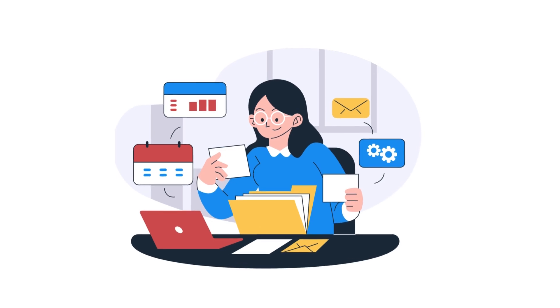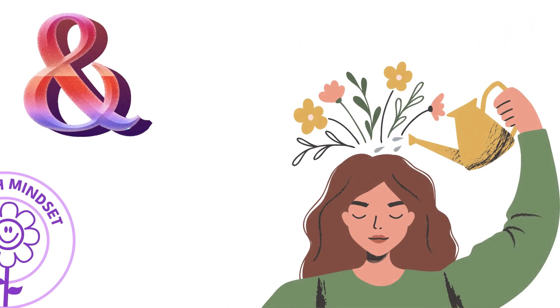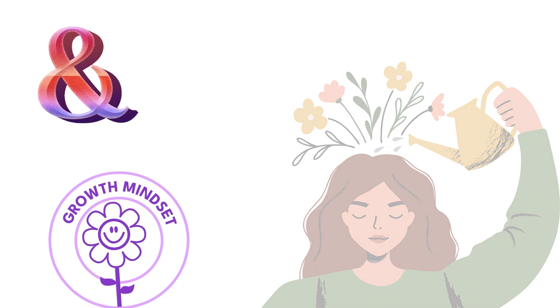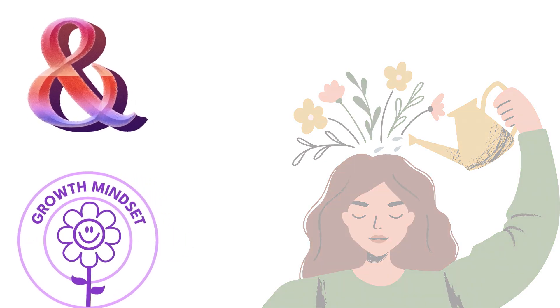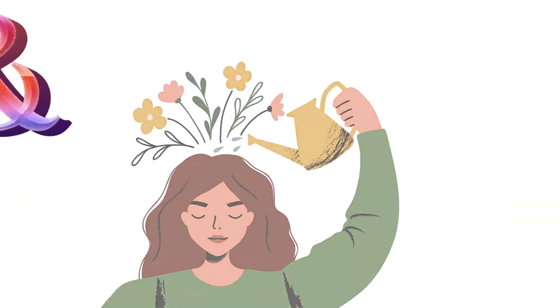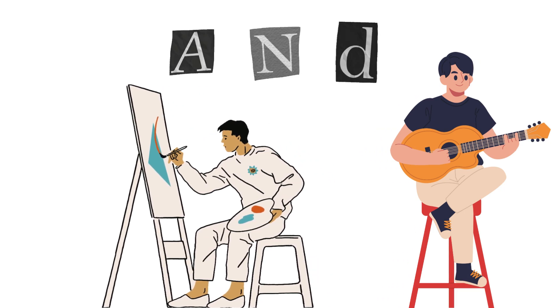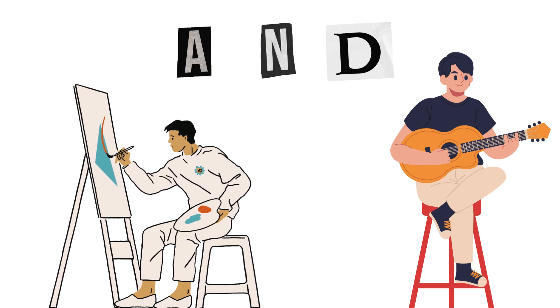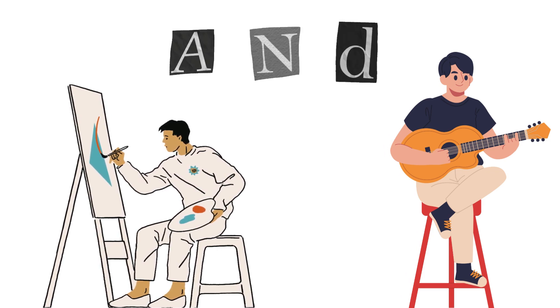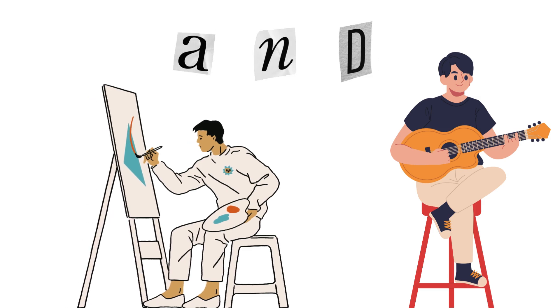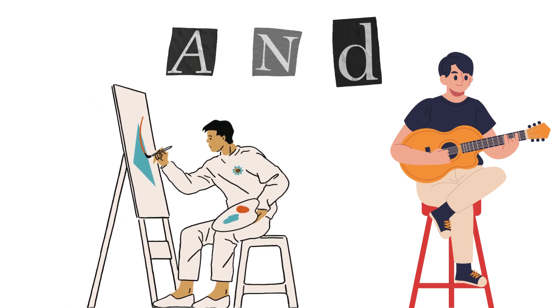Let's break it down into manageable steps, shall we? Step 1. Embrace the power of and. First things first, we need to shift our mindset. It's not either or, it's and. You're not choosing between being a guitarist or a painter. You're a guitarist and a painter. Say it with me. I am a insert interest here and a insert another interest here. Feels good, doesn't it?